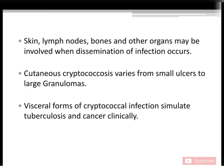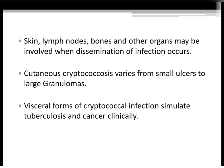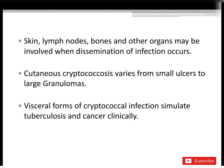Skin, lymph nodes, bones, and other organs may be involved when dissemination of infection occurs. Cutaneous cryptococcosis varies from small ulcers to large granulomas. Visceral forms of cryptococcal infection simulate tuberculosis and cancer clinically.